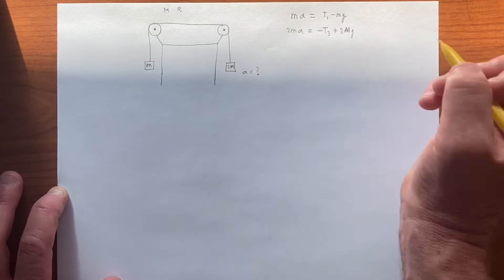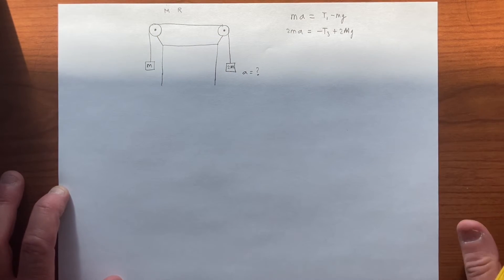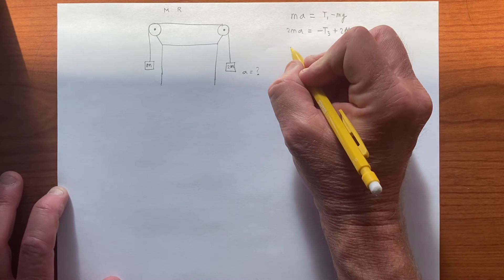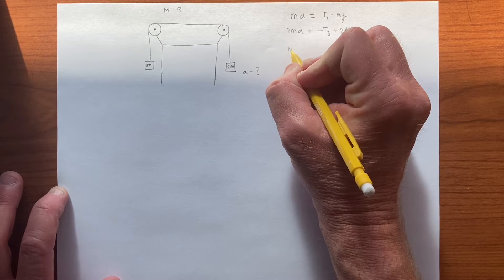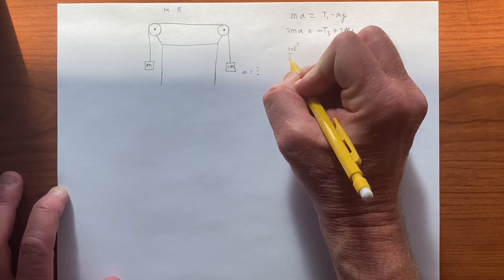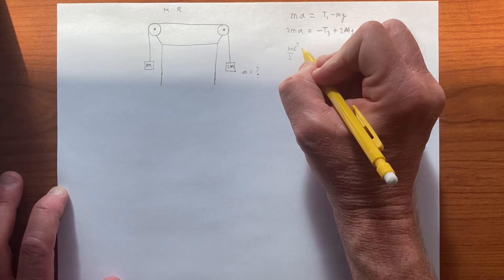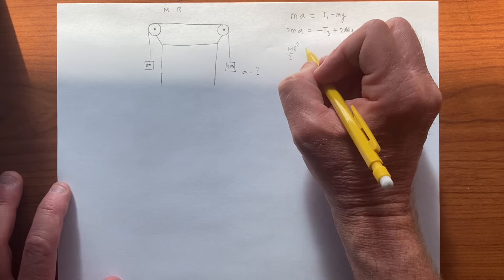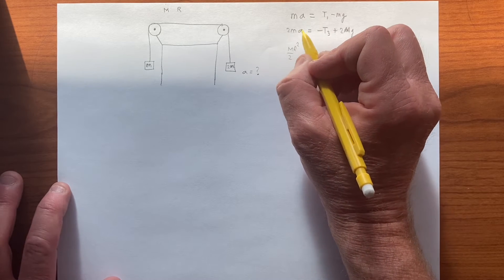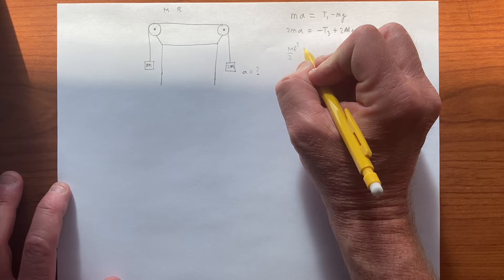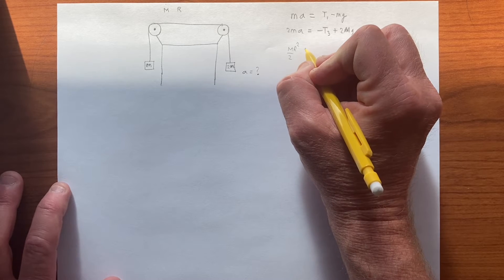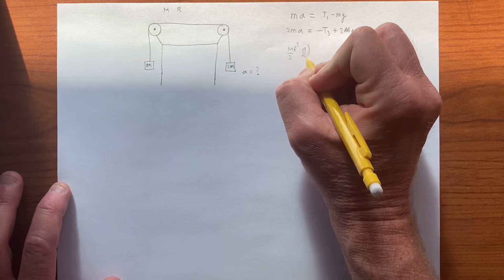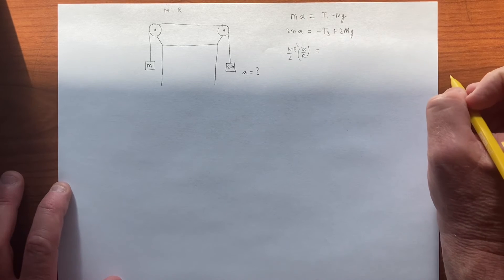So now we have to deal with these two objects, so it's I alpha equals torque, the rotational analog of MA equals f. So we have moment of inertia m r squared over 2, for this one, times the angular acceleration, which is related to the linear acceleration, by alpha equals a over the radius. And we have the angular acceleration is a over r,